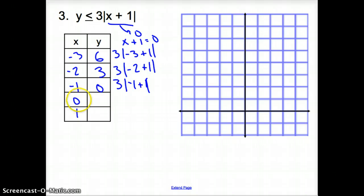Negative 1 plus 1 is 0 times 3 is 0. Then, you can keep working with 0. You can plug it in. Or, if you want, you can trust me that we have 3 and then 6 again. Now, we have our table made. So, let's go ahead and put our points on our graph. So, we go over negative 3 up 1, 2, 3, 4, 5, 6.